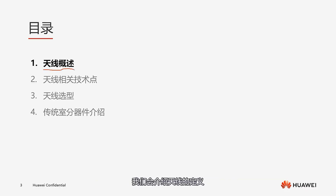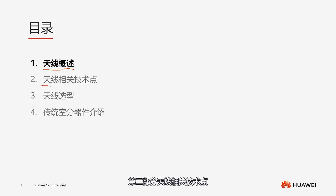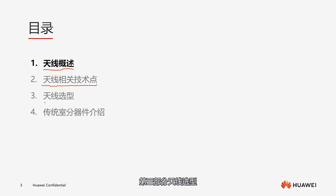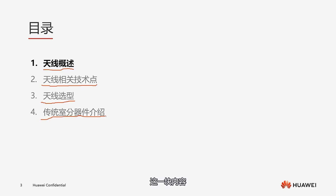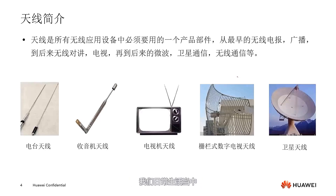This chapter's content can be divided into four parts. The first part is the overview of antennas, covering definition, function, and forms. The second part covers antenna-related technical points — the difficult part, involving physics knowledge — divided into working principles and classic parameters. The third part, antenna selection, is a focus closely related to the next chapter on WLAN project deployment, covering main methods and case studies. The fourth part is an introduction to traditional indoor distribution devices; a simple understanding will suffice, as agile distribution is now more commonly used.